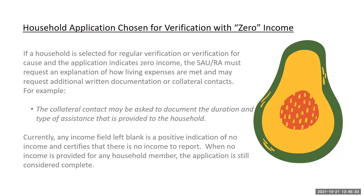When zero income is listed on the application, any income field left blank is a positive indication of no income and certifies that there is no income to report. When no income is provided for any household member, the application is still considered complete. A complete application does include the last four digits of the signer's social security number, or it must indicate that there is no social security number, and it must be signed and dated by the household member completing the application.